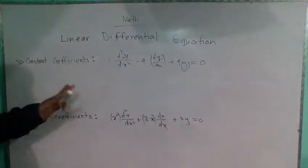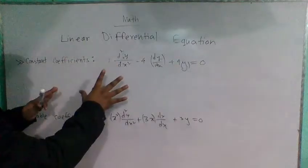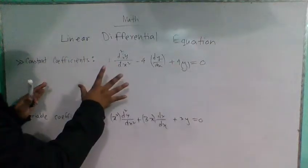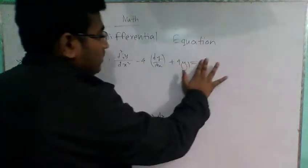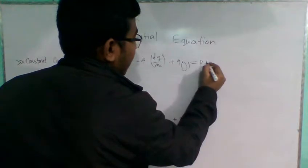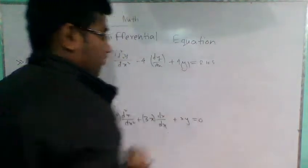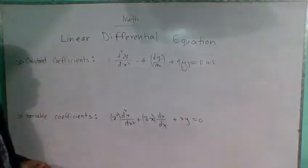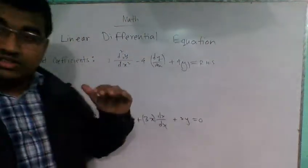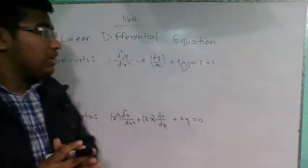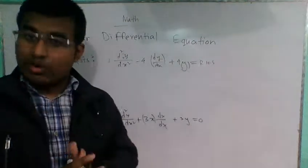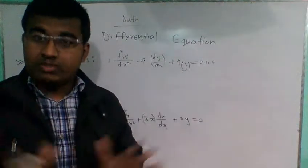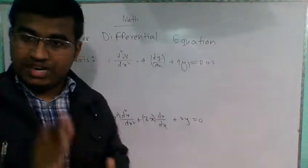For example, the linear differential equation with constant coefficient — what is on the right-hand side? The right-hand side could be 0, or an algebraic function, or an exponential function, or a trigonometric function.